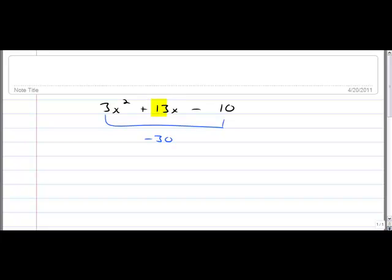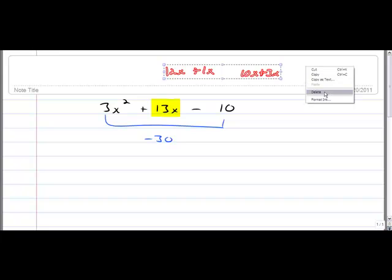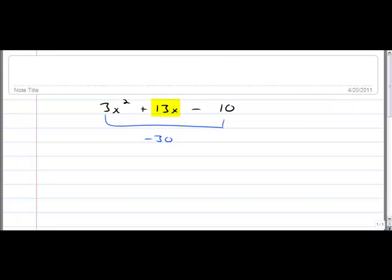Now, think about all the ways that you could rewrite 13x. You'd be like, you know, 12x plus 1x. You could do 10x plus 3x. So many ways you could rewrite 13x.